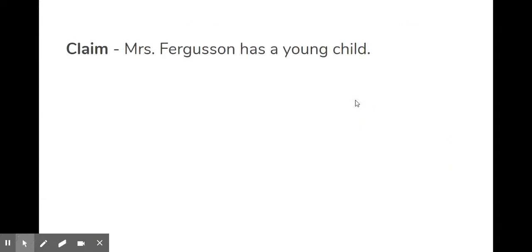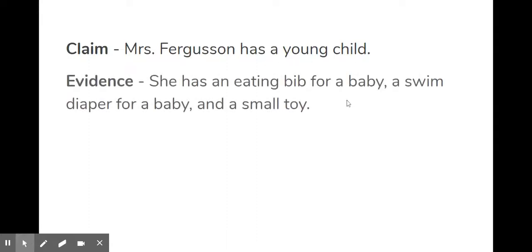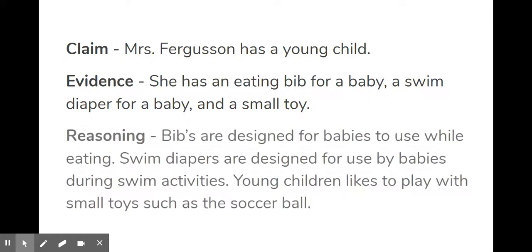So if I break this down into my CER, my claim is going to be: Mrs. Ferguson has a young child. How do I know that? What are my pieces of evidence? She has an eating bib, a swim diaper, and small toys. These are my pieces of evidence. Notice how I didn't explain anything within the evidence piece — I just listed my pieces of evidence. Now I can go ahead and explain my reasoning in the R portion.